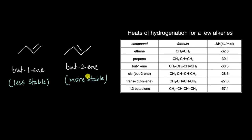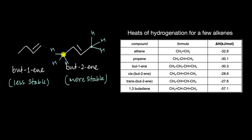By now you know that but-2-ene is more stable than but-1-ene. This is because in but-2-ene we have one, two, three, four, five, six — we have six hydrogen atoms attached at the alpha position that can undergo hyperconjugation with the double bond, compared to only two hydrogen atoms in the case of but-1-ene. Therefore, the pi electrons can get delocalized more in but-2-ene, making this molecule more stable.